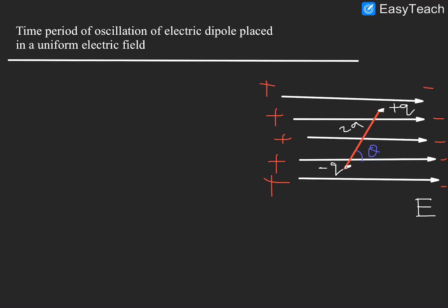Whenever it is at an angle theta with the electric field, that dipole will not stay like that — it will rotate, and the direction can be found using vector methods. Let us consider that plus q is moving down and minus q is moving up. When it is moving, there will be inertia acting on the dipole. So even though finally it becomes parallel — when it is parallel, there is no torque acting on it. This is the stable configuration.